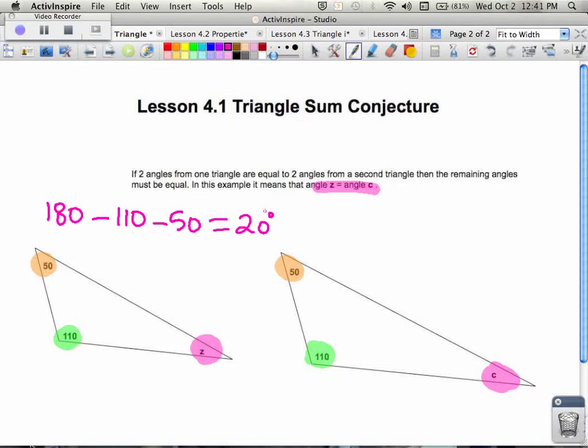So the big idea is that inside of a triangle, the total angle measurement adds up to 180 degrees. And if you know two angles from one triangle and two angles from another, then the third angles must be congruent.